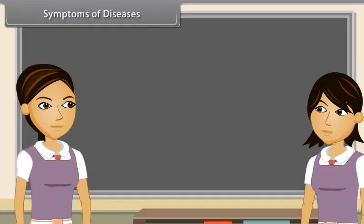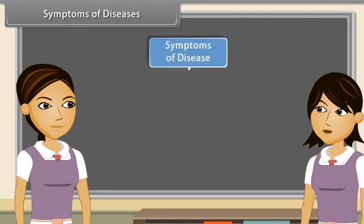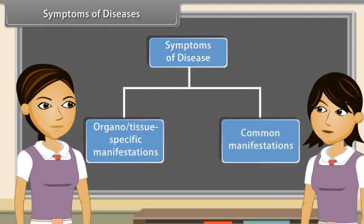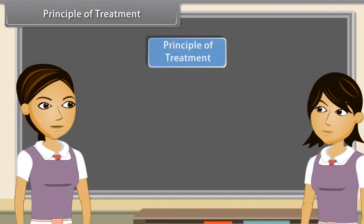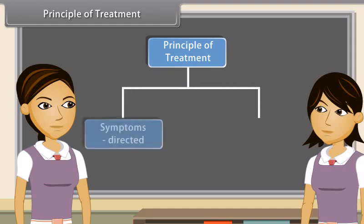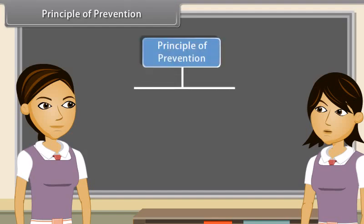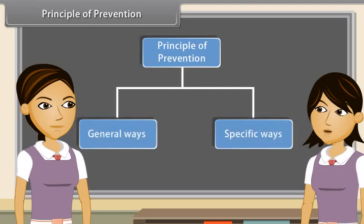Disease symptoms are of two types: organo or tissue specific manifestations and common manifestations. The principle of treatment of various diseases is symptom directed and pathogen directed. There are two broad methods of prevention of disease: general ways and specific ways.